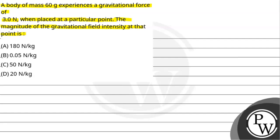A body of mass m equals 60 grams experiences a gravitational force of F equals 3.0 N when placed at a particular point. So now we have to calculate the magnitude of gravitational field intensity, which we denote as IG or I. So let's start with the solution.